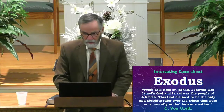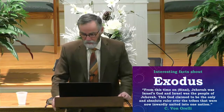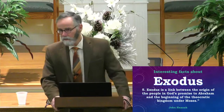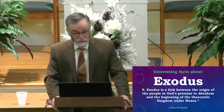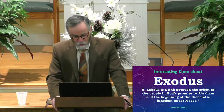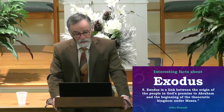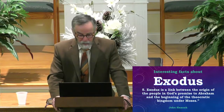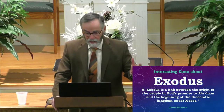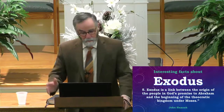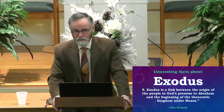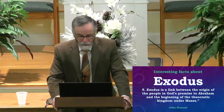Here we see in the book of Exodus something different begins on the earth — God ruling on earth through a human being. Exodus is a link between the origin of the people in God's promise — the seed of Abraham — and the beginning of the theocratic kingdom under Moses. This is a most significant element in the book of Exodus.